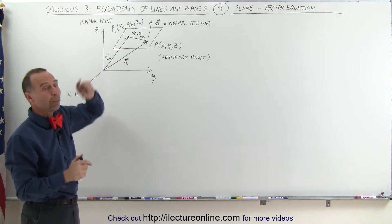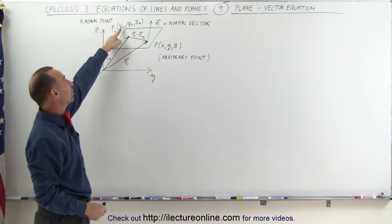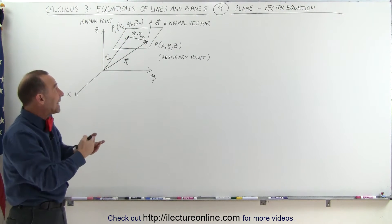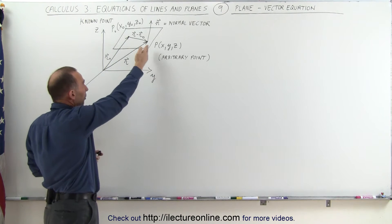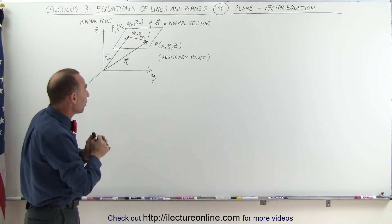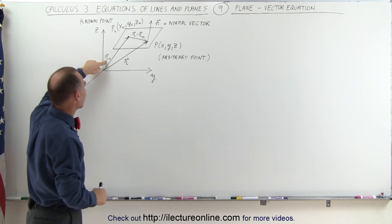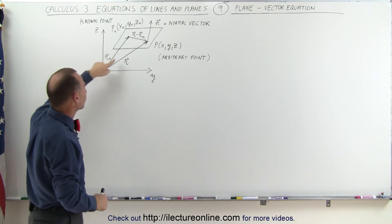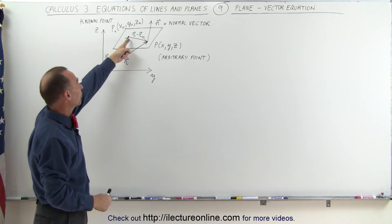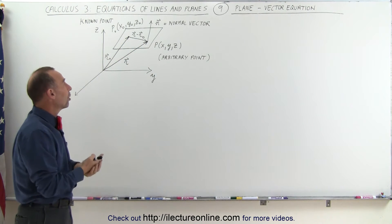Let's assume that we know one point on the plane and we call that point P sub-naught. It has coordinates X sub-naught, Y sub-naught, and Z sub-naught. Of course, we can pick any other point on the plane — any arbitrary point — and call that point XYZ. Then we can draw a vector to the known point called the position vector R sub-naught, a vector to the arbitrary point called R, and a vector from the known point to the arbitrary point called R minus R sub-naught.